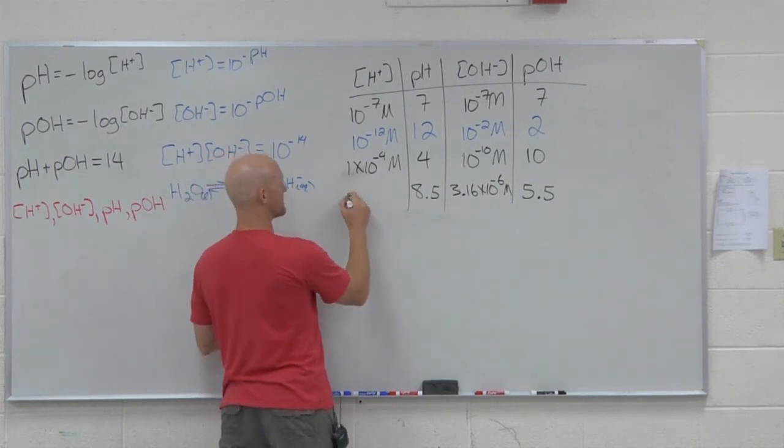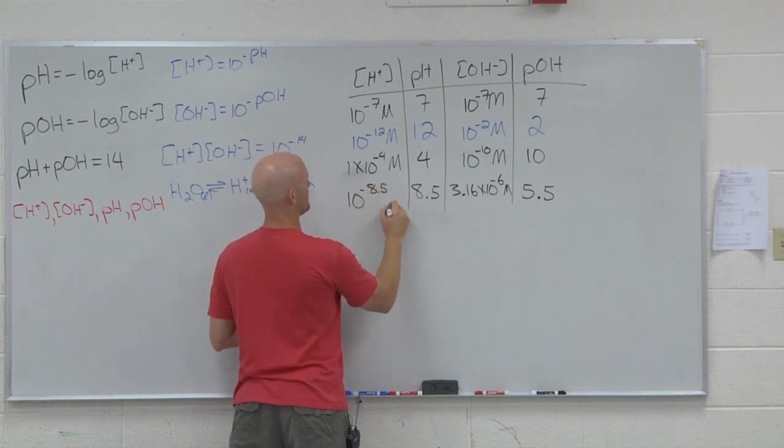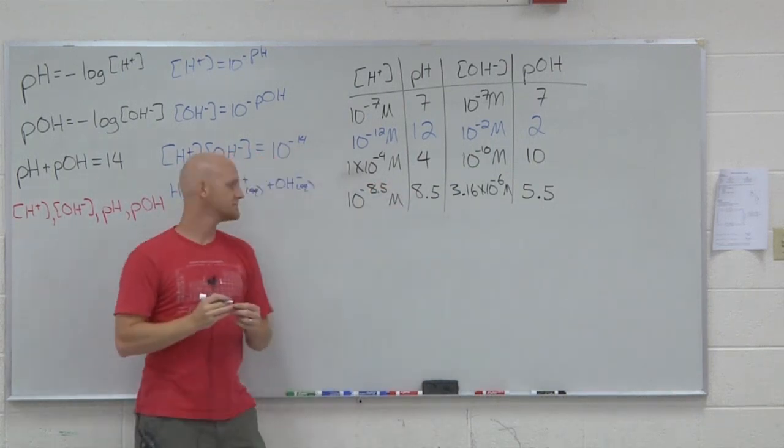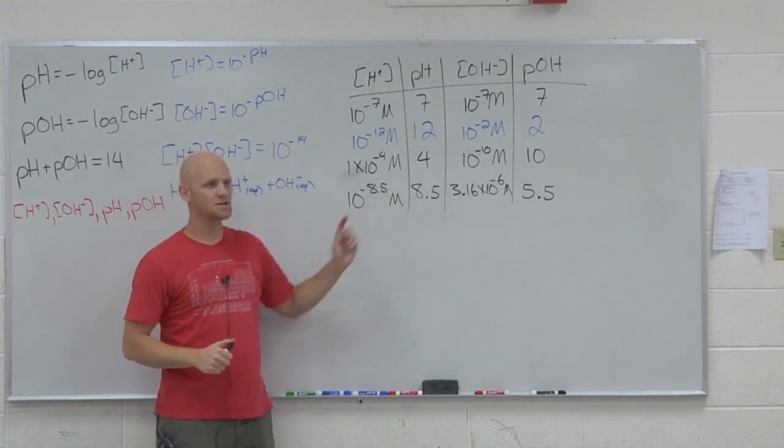And then what's the H plus concentration? 10 to the negative 8.5 molar. It's just 10 to the negative pH.